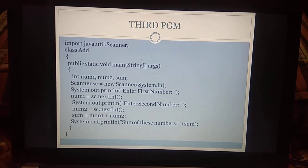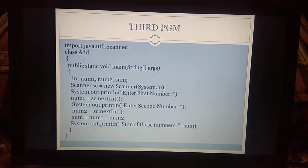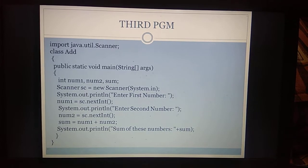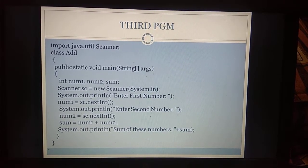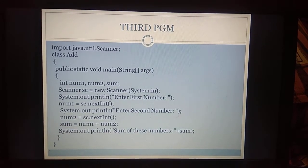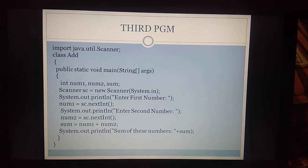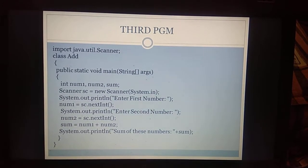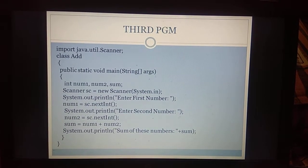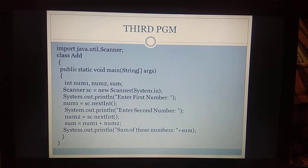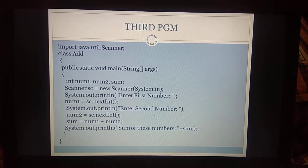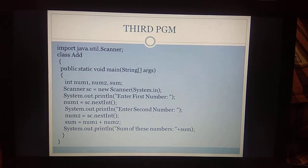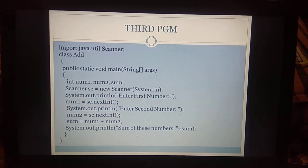Here we are creating a class named as 'add' and opening the class, then giving public static void main. Inside the main function we are creating integer variables int num1, num2, sum. These are the three integer variables we are declaring — we are not assigning values, just declaring. Next, we are creating an object for the Scanner class. Scanner sc = new Scanner(System.in) — sc is the object name. For getting input you have to use System.in; for output, you have to use System.out. We are passing System.in as a parameter while creating the object for the Scanner class.